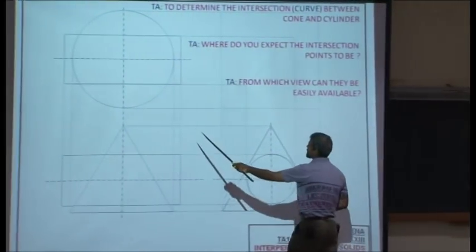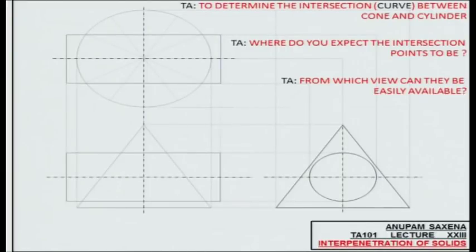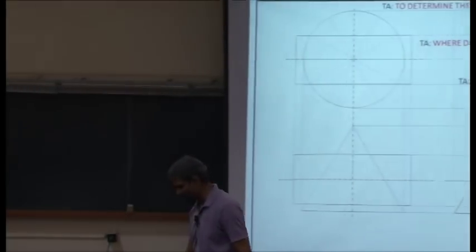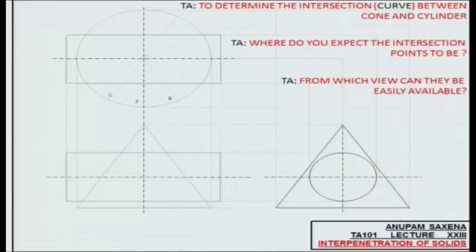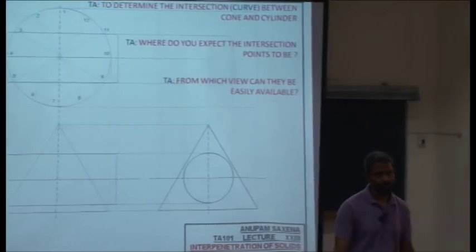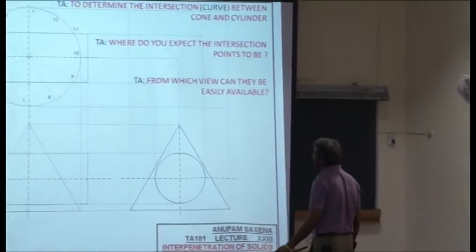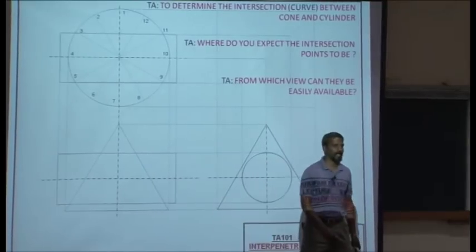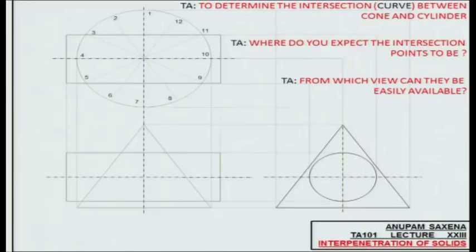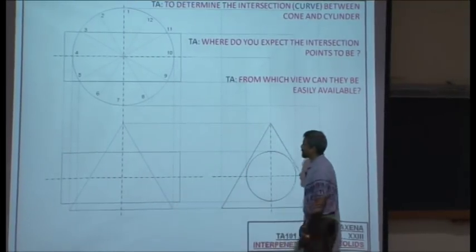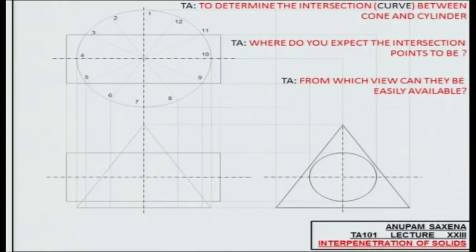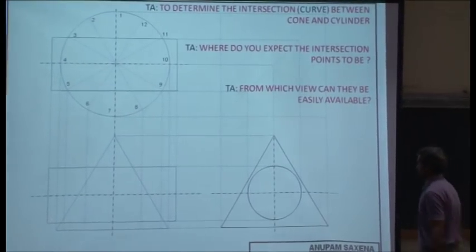I would divide the base of the cone in the top view into equal number of parts — this is where labeling becomes very important. You need to be very careful when you are labeling, because if you are not, then you will mess things up. I number these points anti-clockwise: 1, 2, ... 12. Once I divide the base into 12 equal parts, I start taking projections of these points onto the front view.